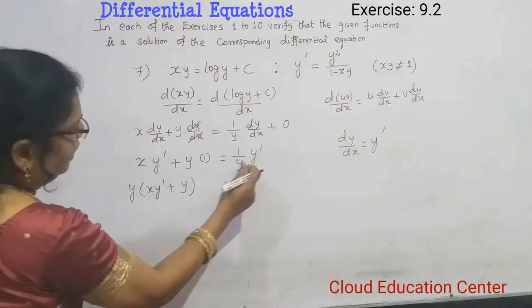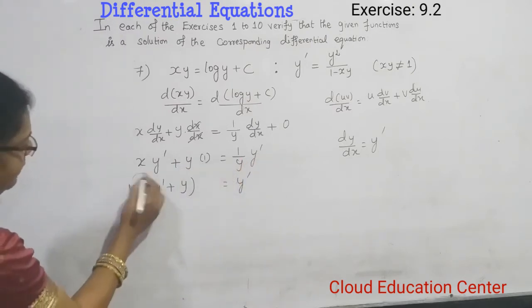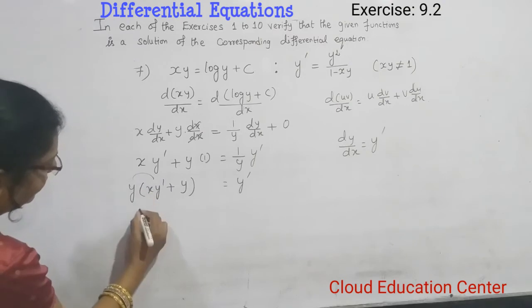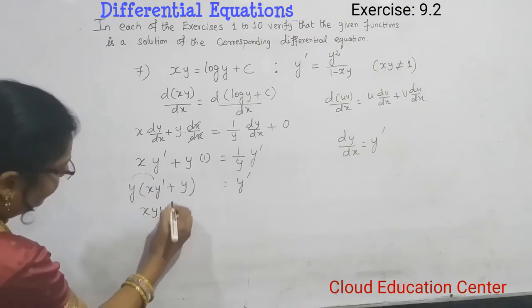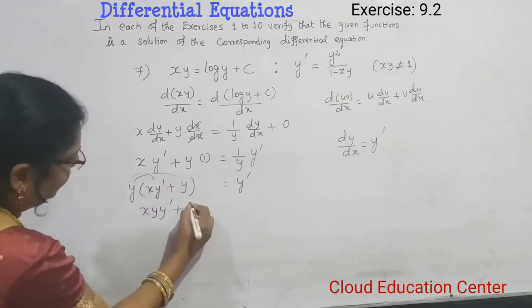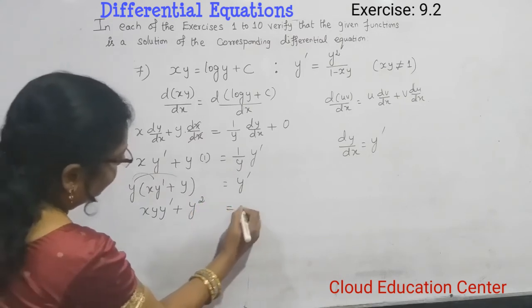Because we moved y from here to here. We multiply, we get xy y dash plus y times y, which gives y square equal to y dash.